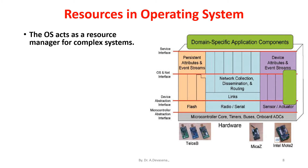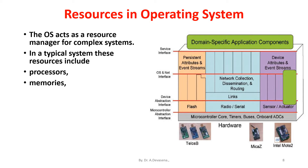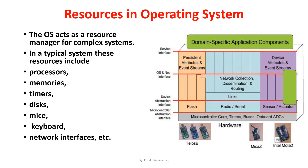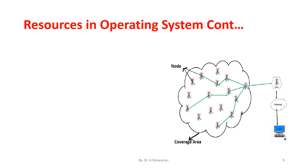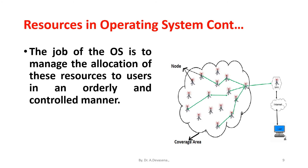In a typical system, these resources include processes, memories, timers, disks, mice, keyboard, network interfaces, etc. The job of the operating system is to manage the allocation of these resources to users in an orderly and controlled manner.